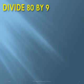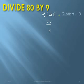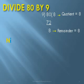We take a second example: divide 80 by 9. 9 eights are 72, so after subtraction we get 8. That means the quotient is 8 and the remainder is 8. Now we do the same division using the Nikola method.